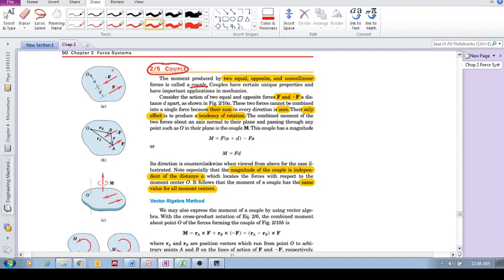Now let's look at how these two forces, equal, opposite, and not collinear, affect this object, this body. Let's add up the forces. F minus F gives us zero.